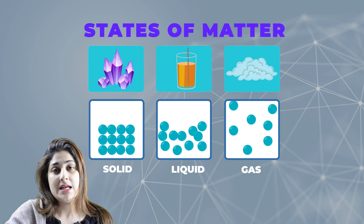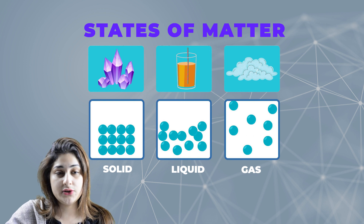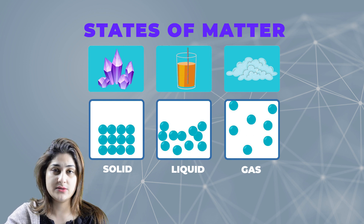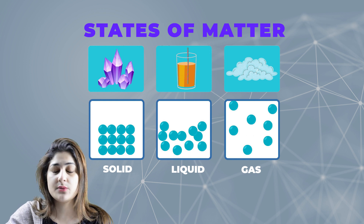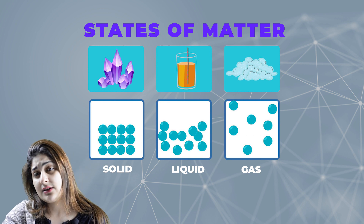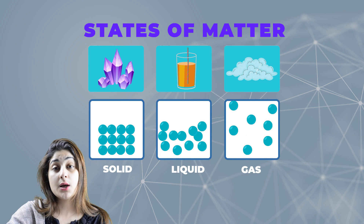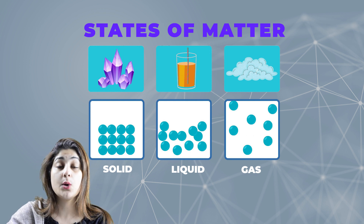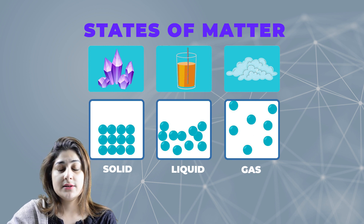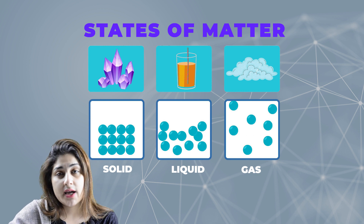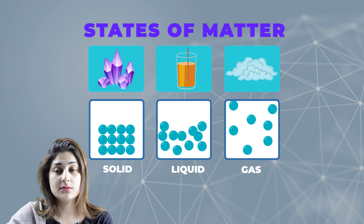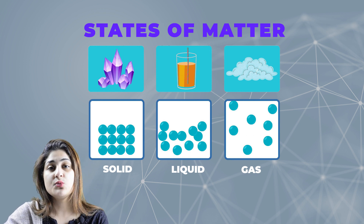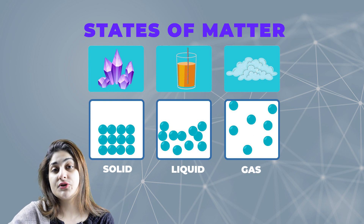Let's quickly look at how different states have different arrangements or patterns of molecules. If you look at the screen, you can see how solid particles have tightly held molecules in a proper sequence, a proper pattern. Moving towards the liquid state, you would be able to distinguish how the molecules are scattered and not in a proper sequence. For gas particles, the molecules are very scattered, with no bond in between — they are just moving. That's one reason gases do not appear to have a specific shape.